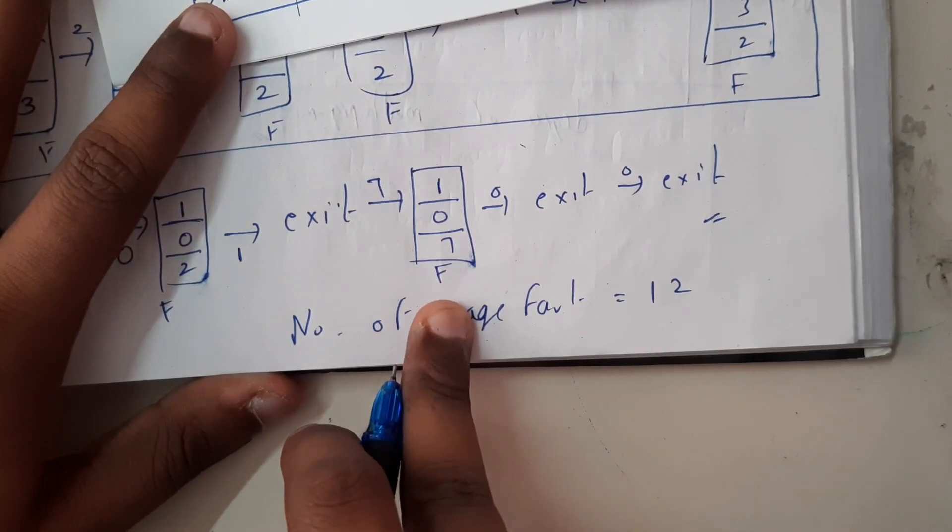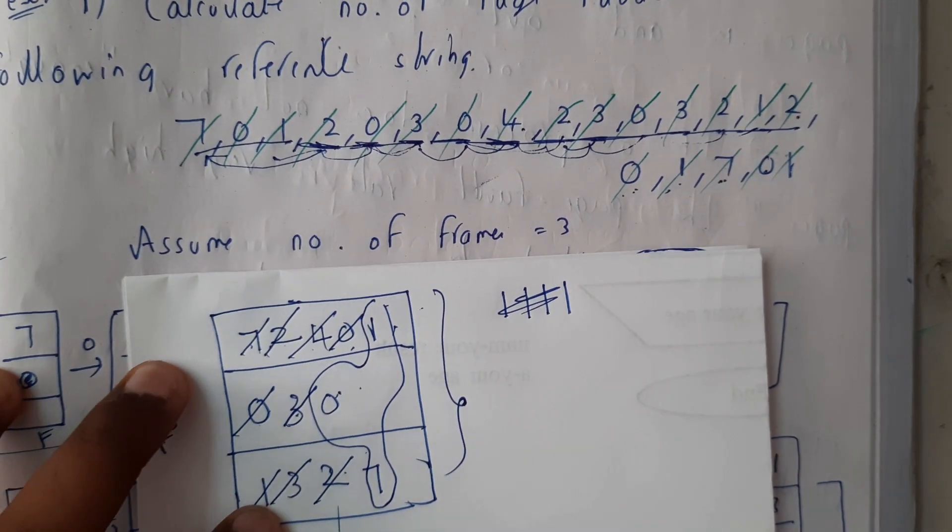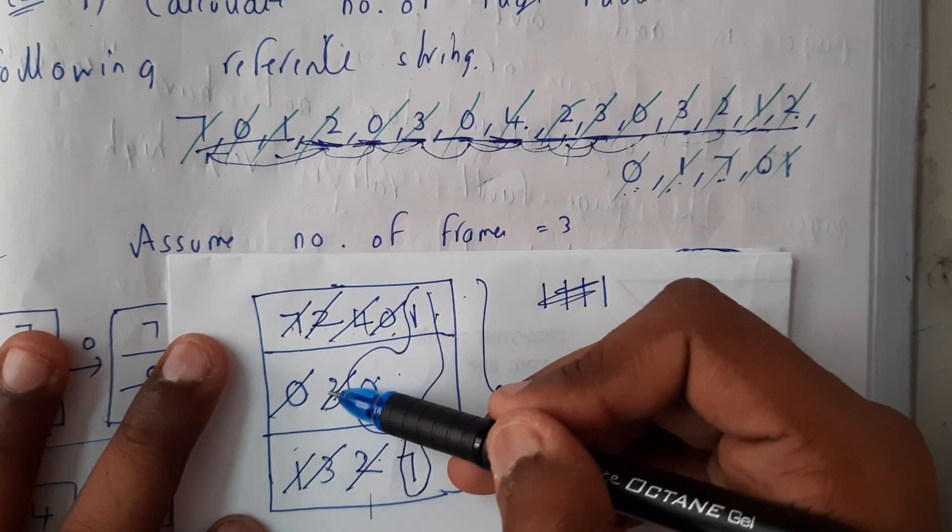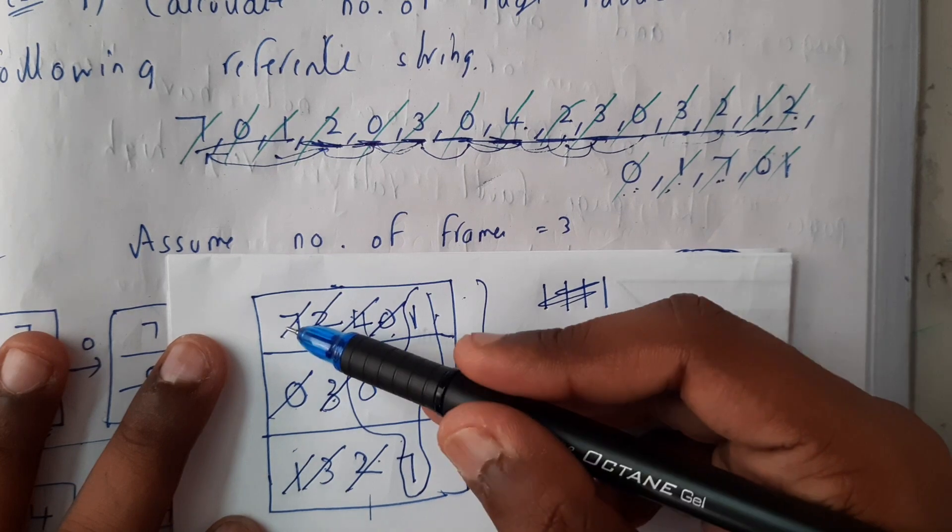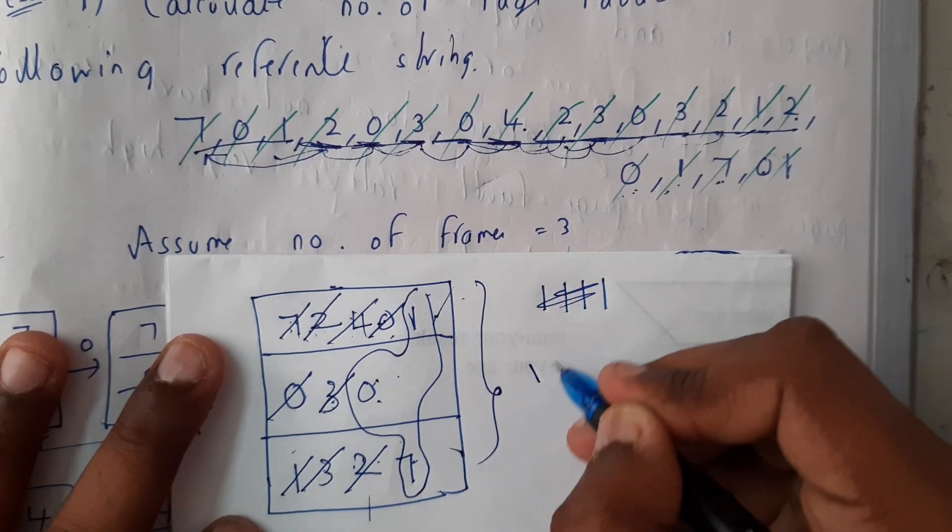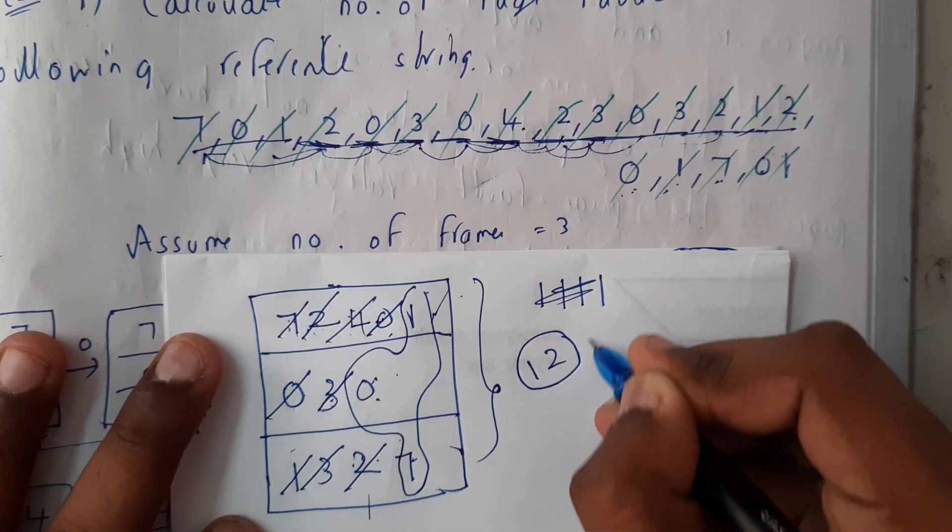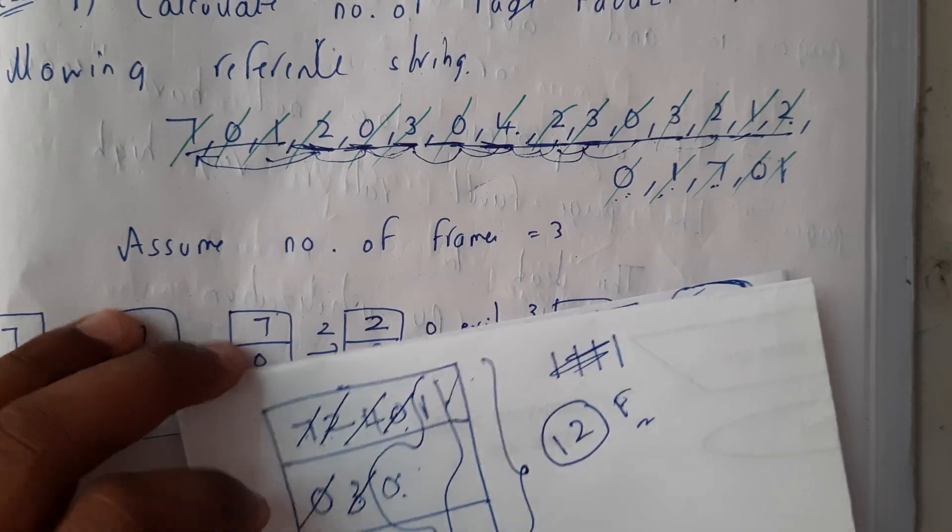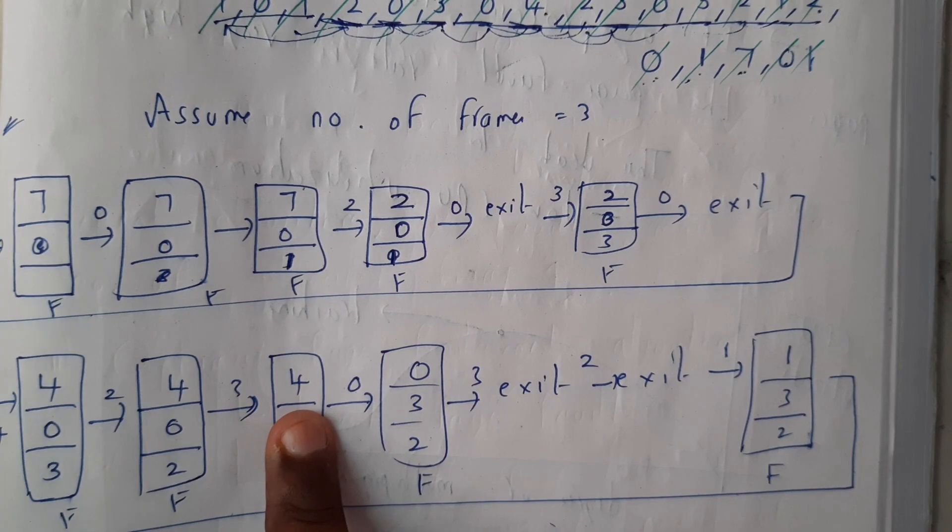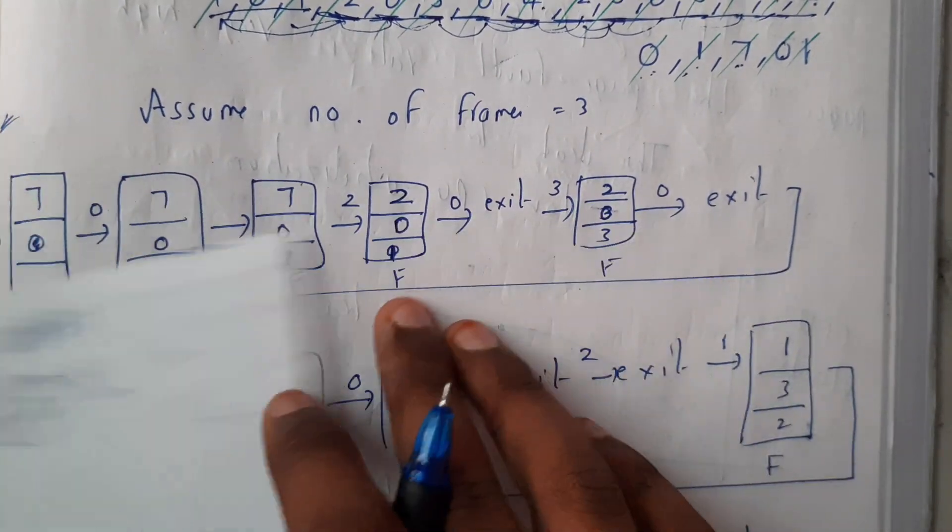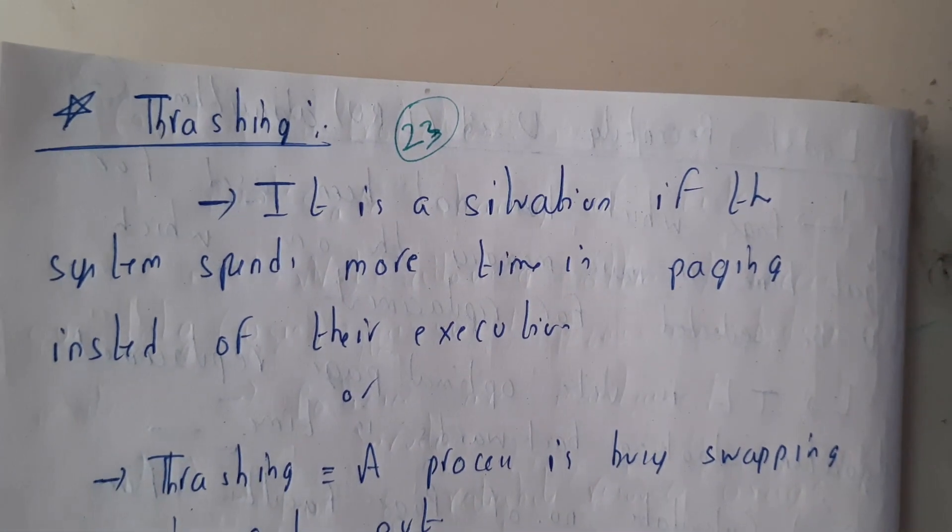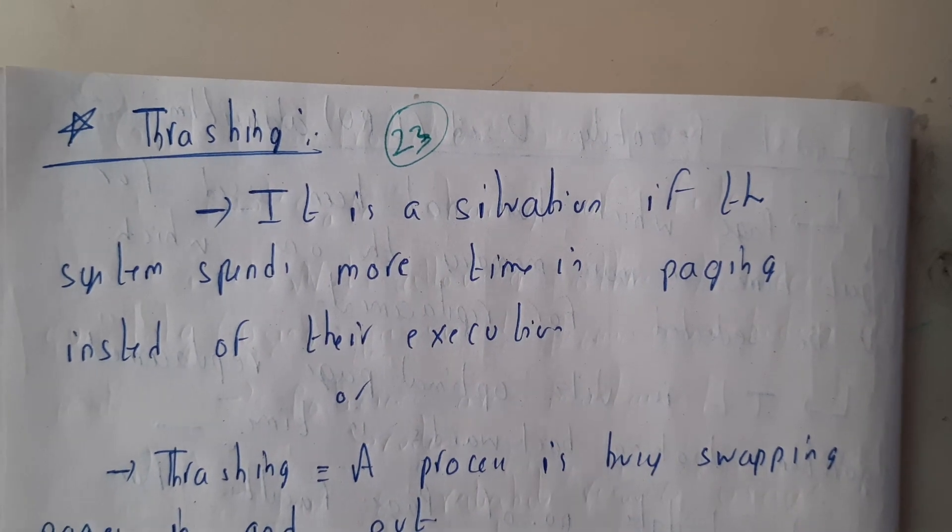Now if you want to count the number of faults, how many crosses did you do? That's it. One, two, three, four, five, six, seven, eight, nine, ten, eleven, twelve. So totally we are having twelve faults. I hope everyone got a small idea. Just to save your time I took a small shortcut to do on a single piece of paper. So now I hope everyone got an idea on this. In the next tutorial we'll be going to the last topic of this chapter which is thrashing. Thank you, thanks for watching.